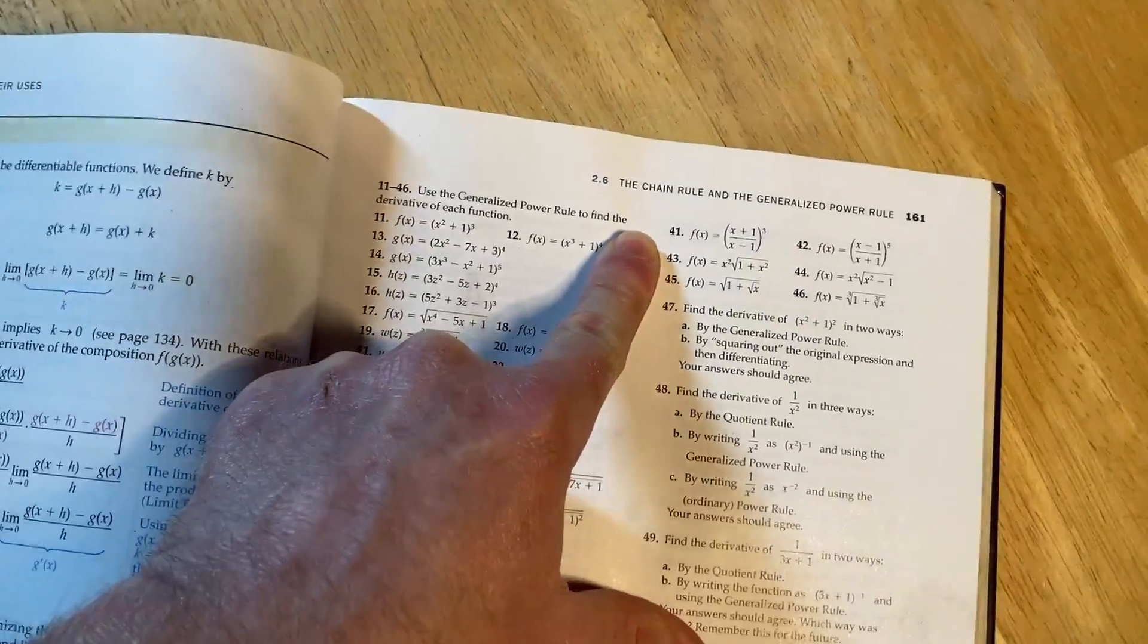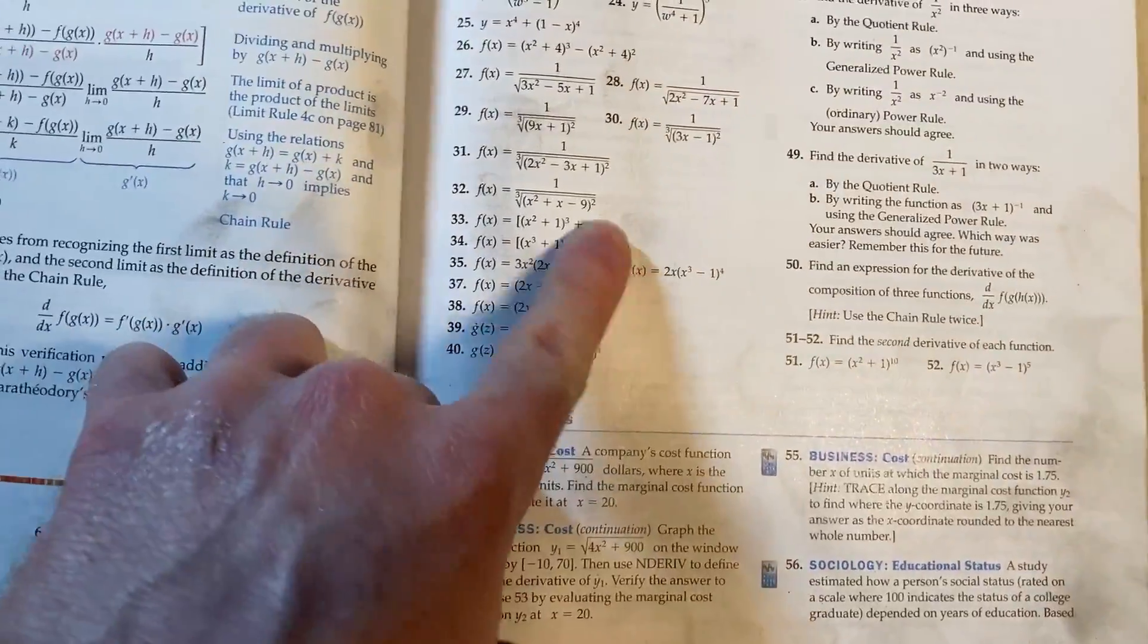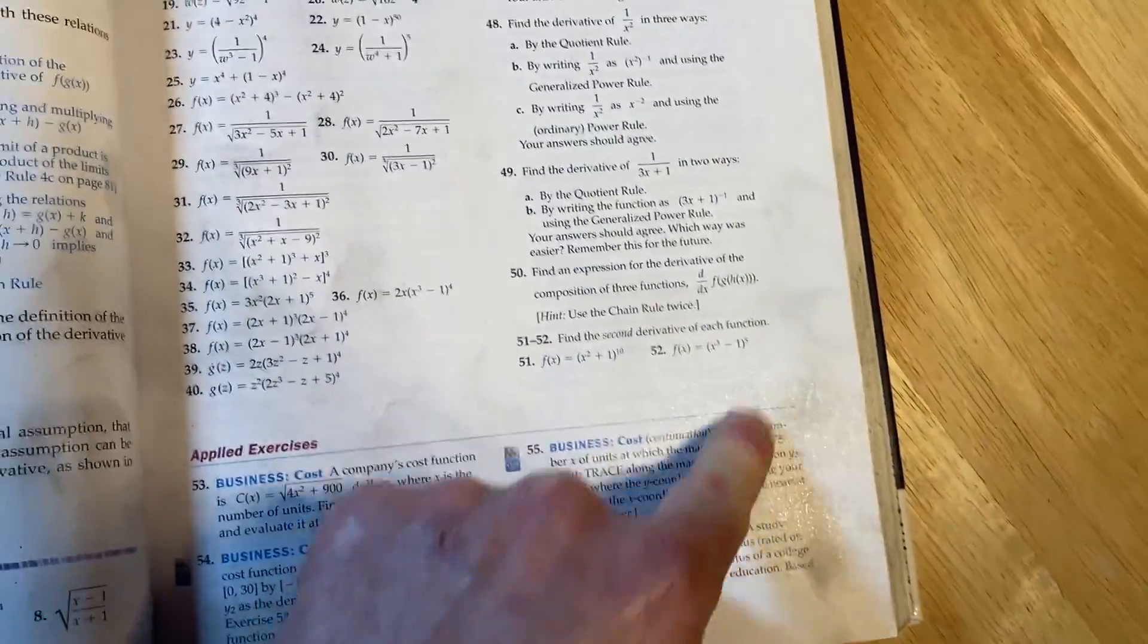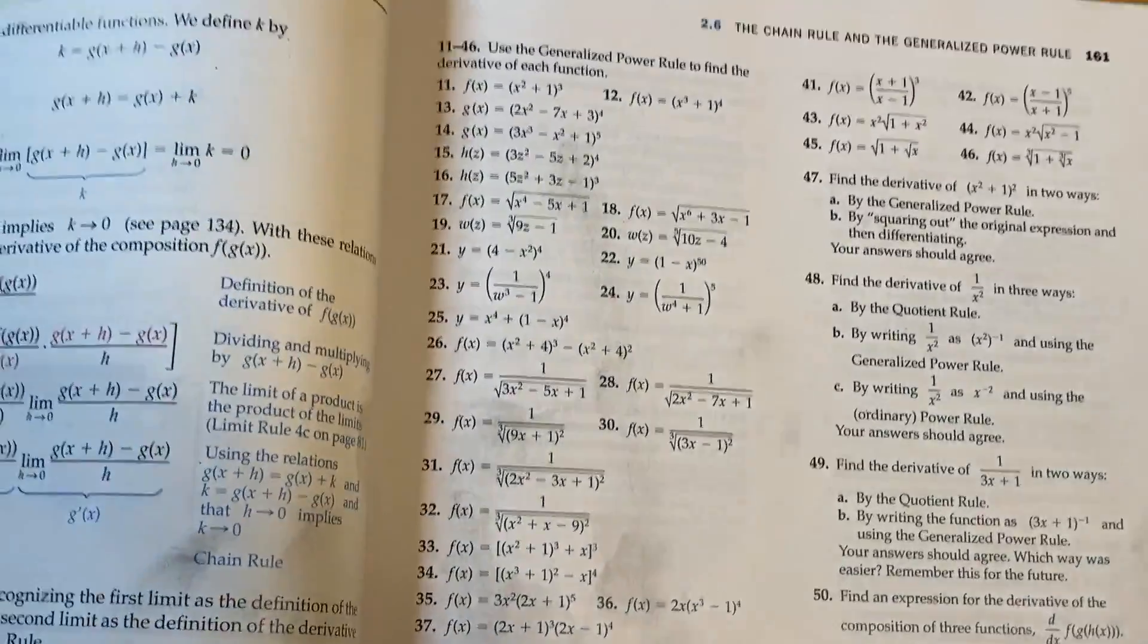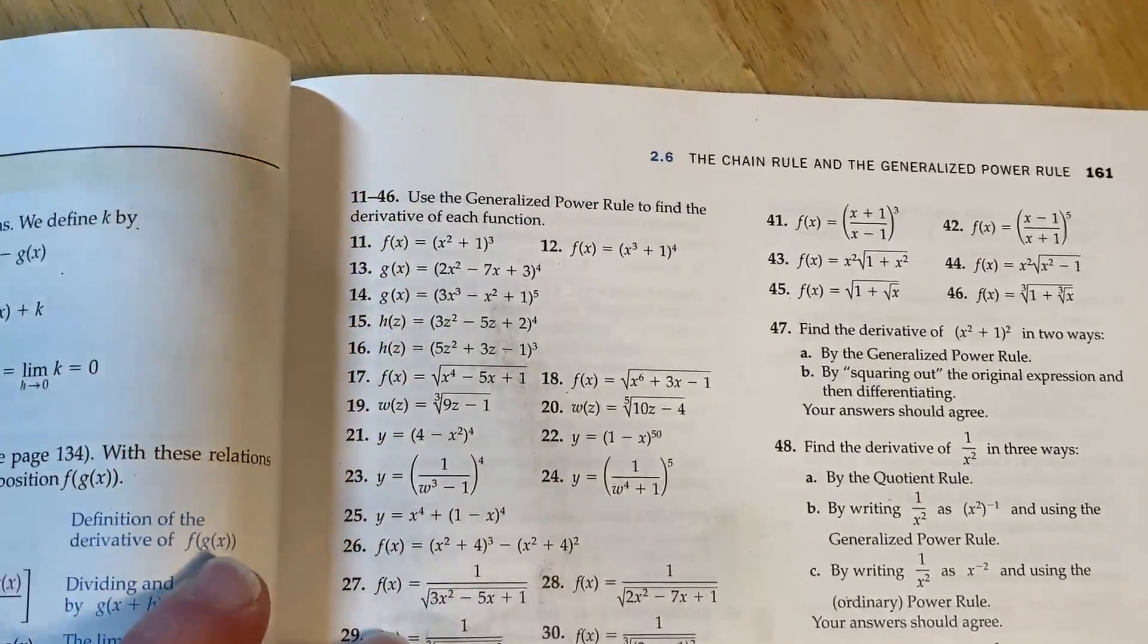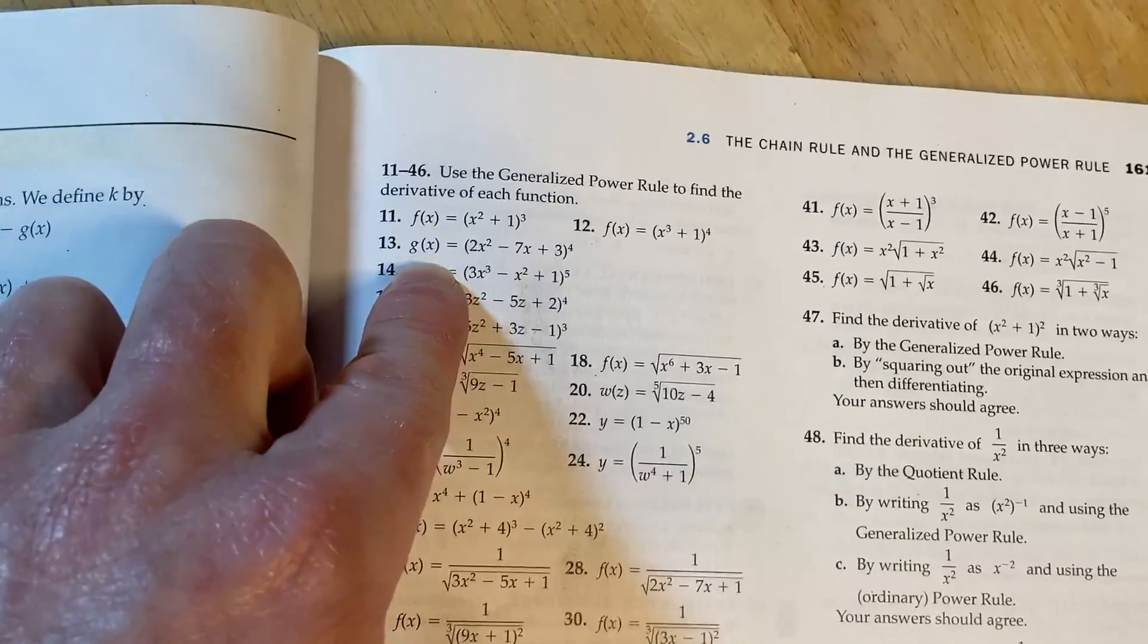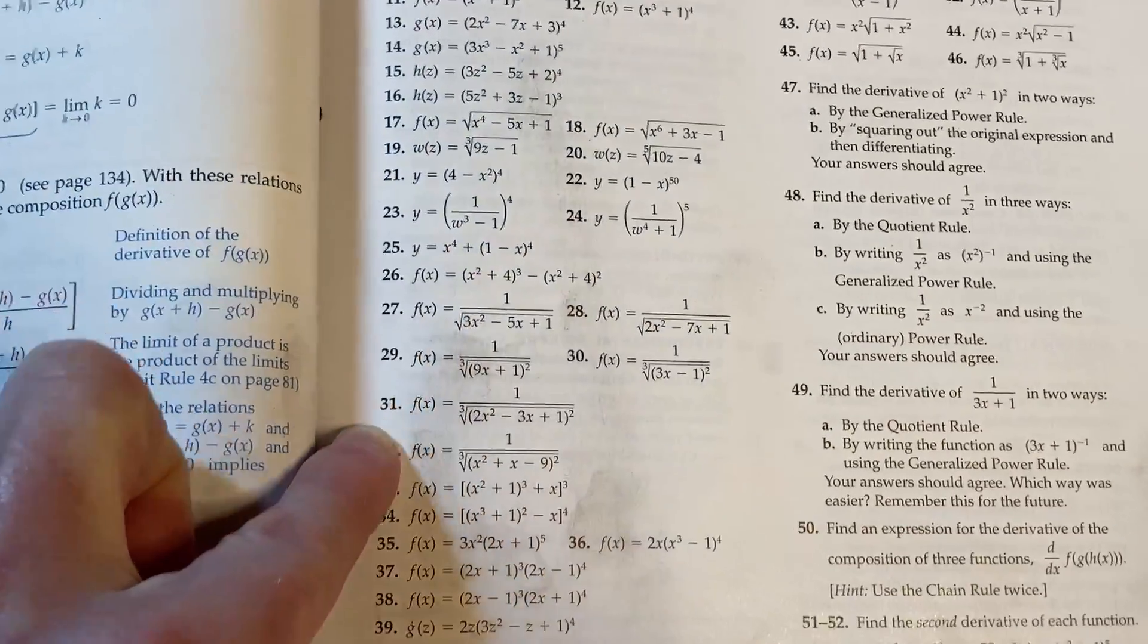So this is the section on the chain rule and what the book calls the generalized power rule. And you can see here my marker stains because again I've used this for teaching. So a lot of times I would do examples from books and those are my old fingerprints from when I've taught this class in the past. So really basic stuff. Notice there's no trig.